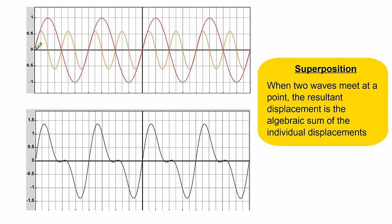So let's begin with time zero, which is this point here. You'll see at this point that both the red wave and the orange wave have a displacement of zero, so therefore our resultant point will be here.